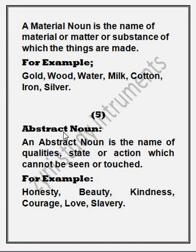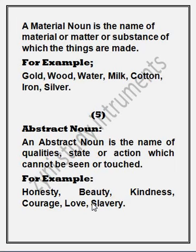Fifth and the last is abstract noun. An abstract noun is the name of qualities, state, or action which cannot be seen or touched. Abstract noun ایک ایسی صفت ہے — کسی بھی عمل یا کام کی ایسی صفت جسے ہم چھو نہیں سکتے، دیکھ نہیں سکتے. For example: honesty, beauty, kindness, courage, love, slavery — ان چیزوں کو ہم چھو نہیں سکتے، نہ دیکھ سکتے ہیں، صرف feel کر سکتے ہیں.